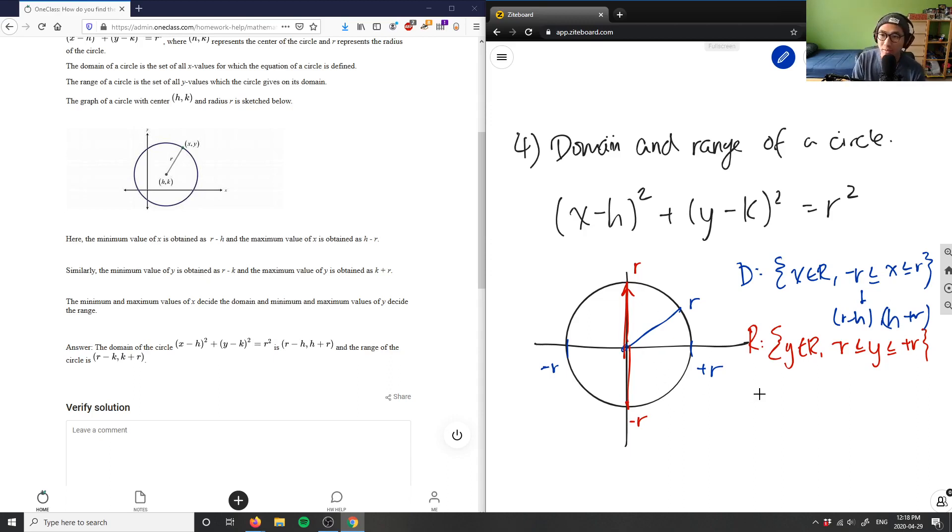And h plus r here which is basically from here to here and here to here. And same with the range here, we can say also for range we can say here it's k, we can say r minus k or k plus r here. And this here would be also correct for depending on where the center of the circle is.